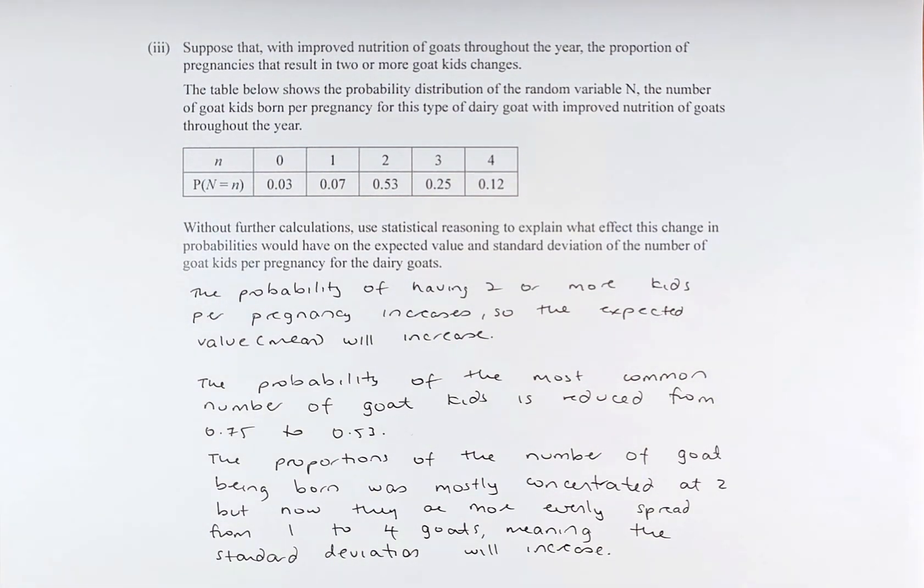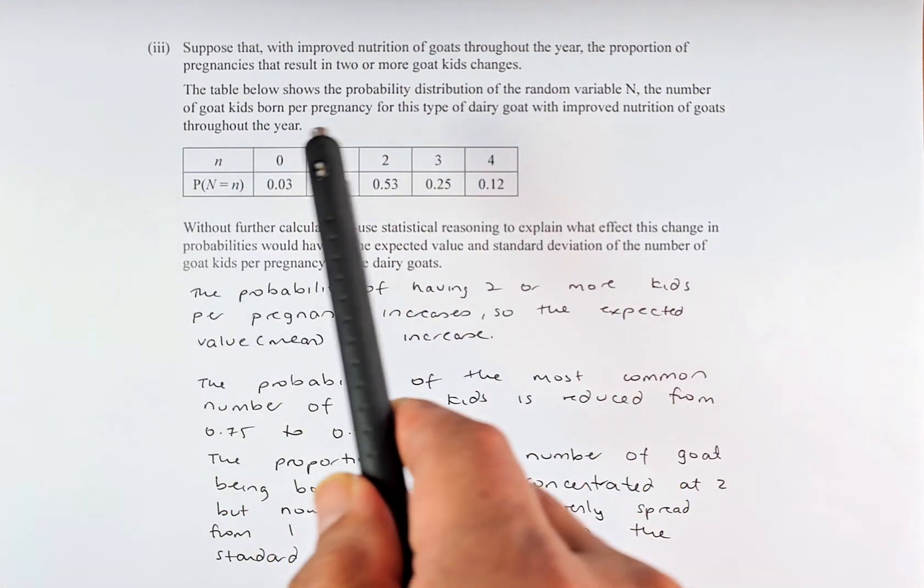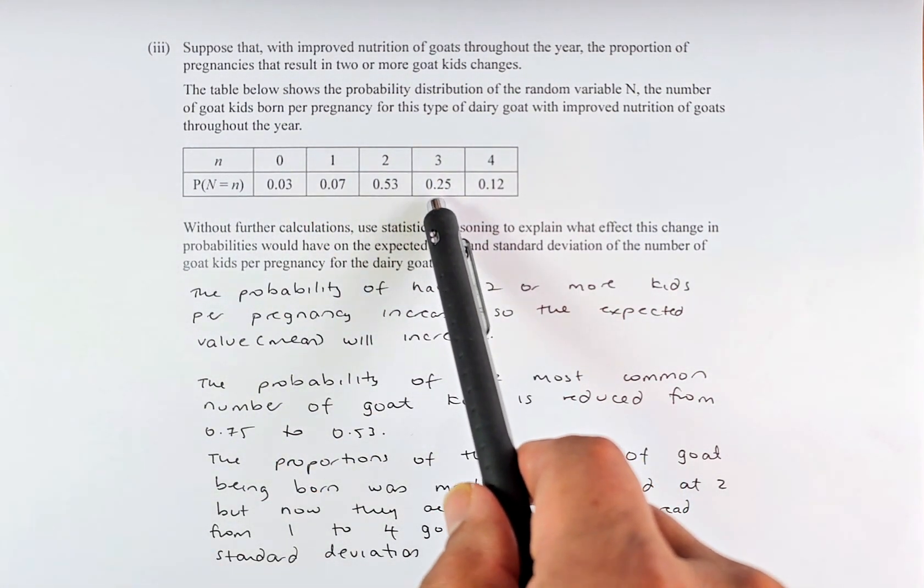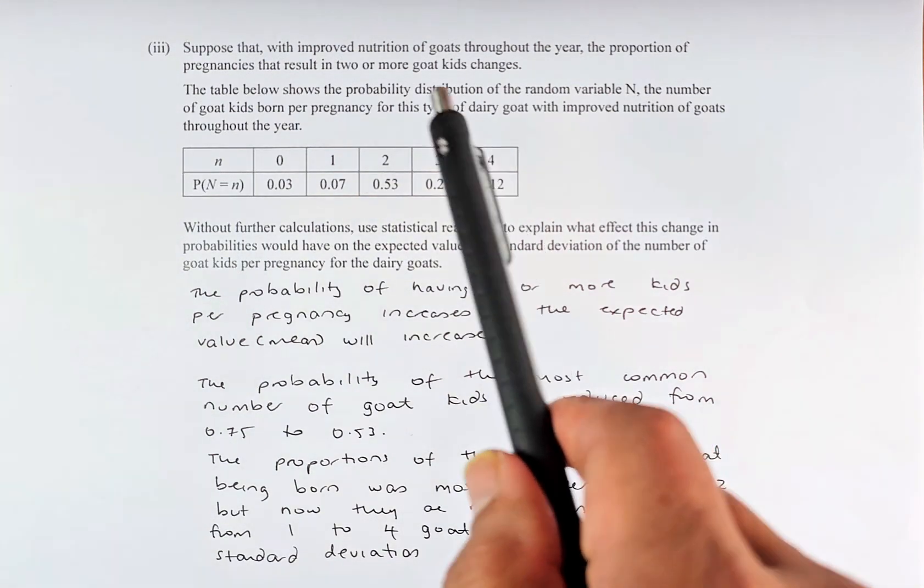Suppose that we improve nutrition of the goat throughout the year, the proportion of pregnancy that results in two or more goat kids changes. The table shows the probability distribution of the random variable n, the number of goat kids born per pregnancy for this type of dairy goat with improved nutrition of goat throughout the year. So you can see the number here. If you compare with the first table, we have bigger numbers for 3 goats or 4 goats.